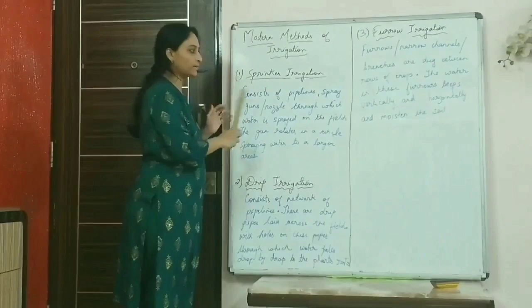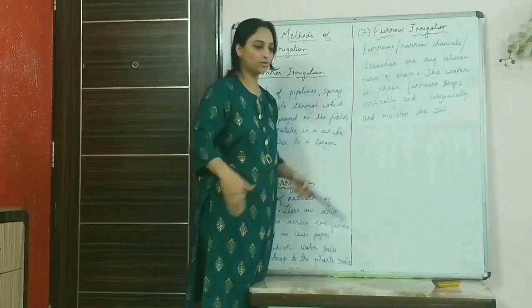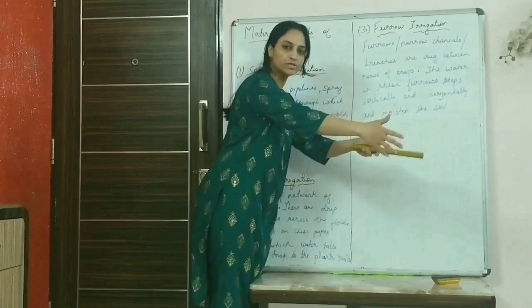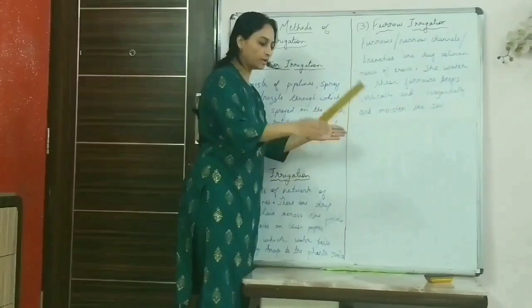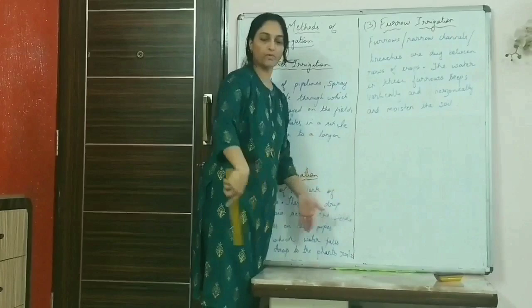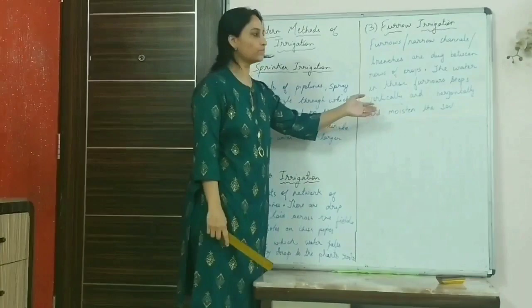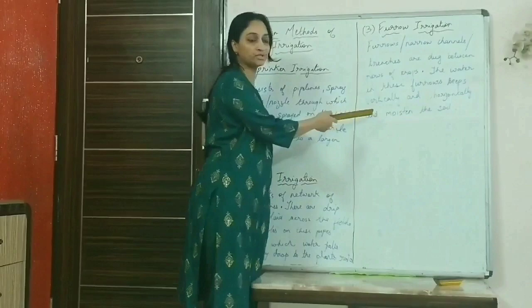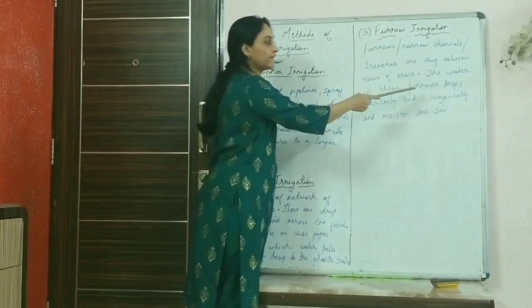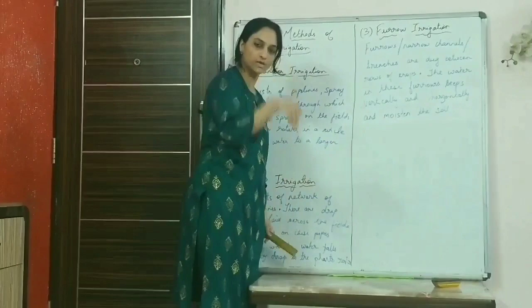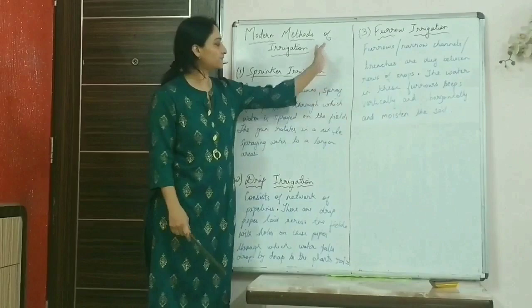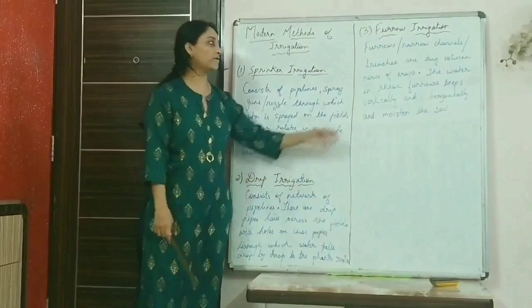The third modern method is furrow irrigation. Narrow trenches or furrows of equal dimensions are dug between rows of crops, and water is poured into them. The water then seeps sideways and vertically into the soil, moistening it and giving water to the crops. These are the three modern methods of irrigation — sprinkler, drip, and furrow — as mentioned in the textbook.